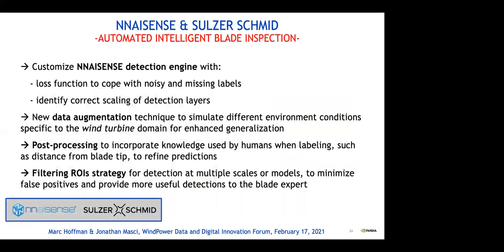Another application of AI in industry is blade inspection. AI is used to draw conclusions from inspection data, analyzing damage progression over time in an autonomous way. AI object detection algorithms are applied and results are sent to blade experts for refinement. These techniques help avoid blade failure and enable early detection of defects, leading to reduction of costs in operation and maintenance.